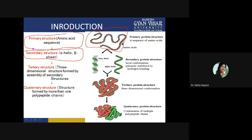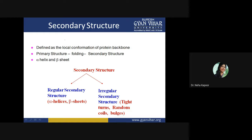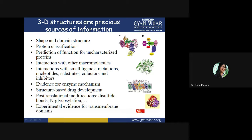Our main topic is secondary structure — the local conformation of the protein backbone. There are two major types: alpha helix and beta sheets. You can divide secondary structure into regular types, which are alpha helix and beta sheet, and irregular types such as tight turns, random coils, and random bulges.